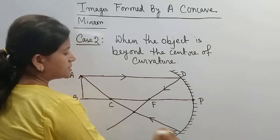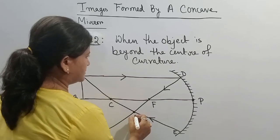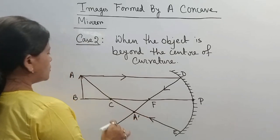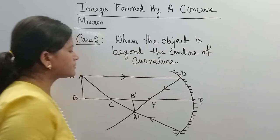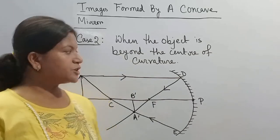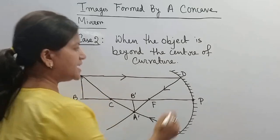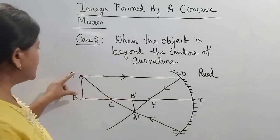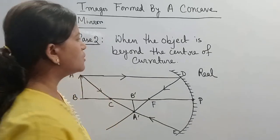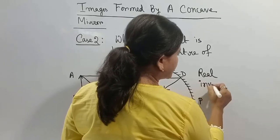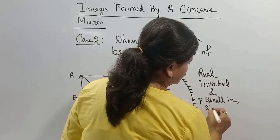Both of these reflected rays meet at a point, which I denote as A dash. So the image of AB is formed here. The image is a real image because both reflected rays meet at a point. The image is also inverted, because the object is AB but the image is B dash A dash. The image is real, inverted, and smaller in size compared to the object.